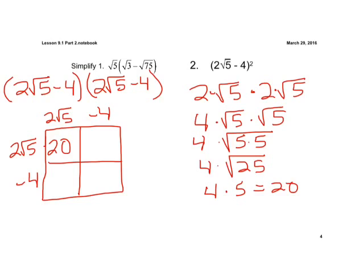Now multiply the outside. If we have negative 4 times 2 square root of 5, we're back in our box here. We're going to have negative 8, because we're multiplying negative 4 and 2 — negative 8 square root of 5. If we have that in that box, negative 4 times 2, again, is negative 8 square root of 5.